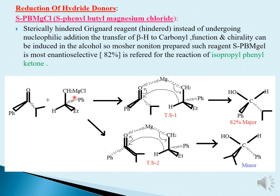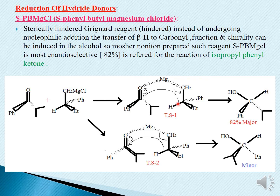This is a sterically hindered Grignard reagent. In the first step, there is formation of a transition state: the CH2 minus is present, then Mg plus, with a lone pair of electrons forming a complex — a transition state between O and Mg — and then Cl cleaves out, generating transition state one. After that, there is a hydride shift, the bond shifts making O minus, and there is abstraction of a proton, resulting in the major product at 82% yield.